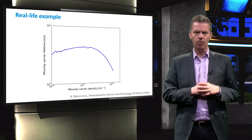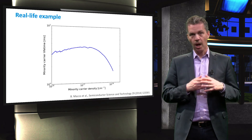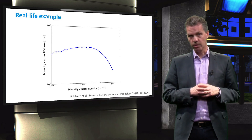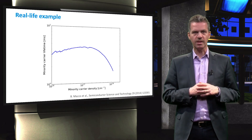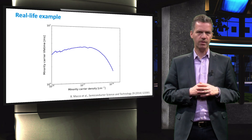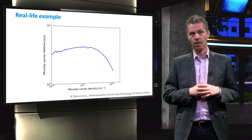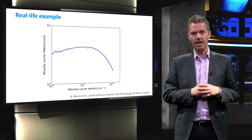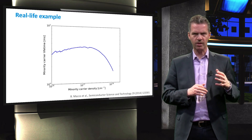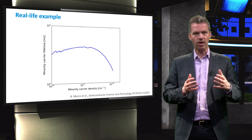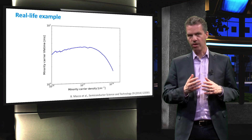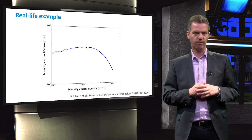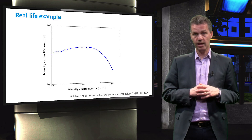So far we have only discussed the theory. If we examine a real measurement, the situation is somewhat different. In this graph, you see a measurement taken on crystalline silicon wafers of which the surface is passivated. Obviously, for high injection levels — when the minority carrier density is large — the lifetime drops as a result of Auger recombination. In this case, we see that for lower injection levels the lifetime drops slightly as well.